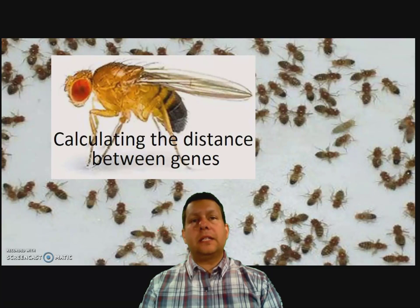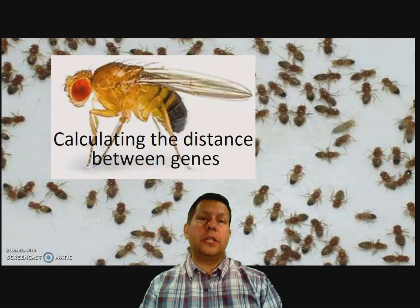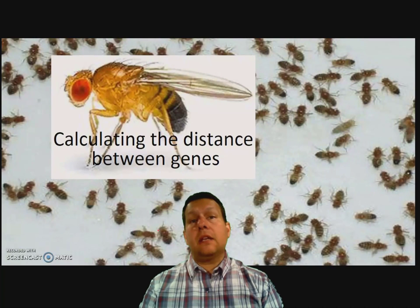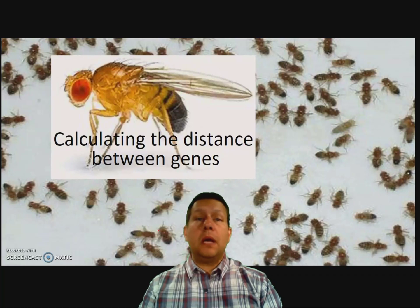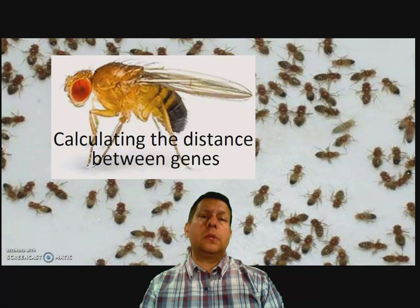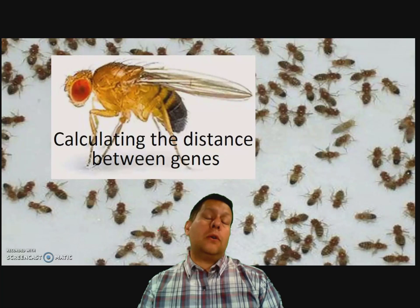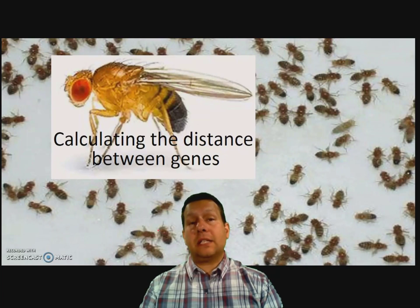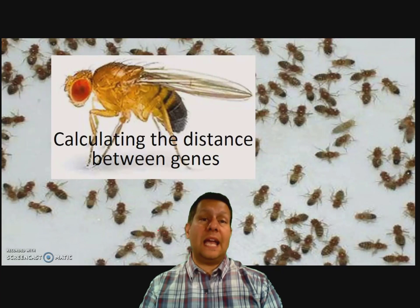Hi, it's Mr. Palachek, and today I'm going to be talking to you about how we use fruit flies and genetic crosses to determine if traits are found on the same chromosome or not, and if they are found on the same chromosome, how far apart are they? Eventually, this will tell us how these traits are arranged on a chromosome and we can start mapping them out. That's going to be a separate screencast and I'll talk about that at the end.